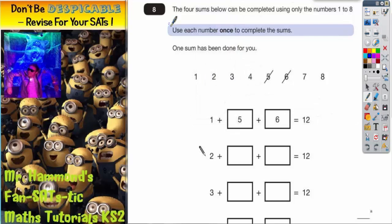Question 8. It says the four sums below can be completed using only the numbers 1 to 8. Use each number once - and that's written in bold - to complete the sums. So you're not allowed to use each number more than once. One sum has been done for you.